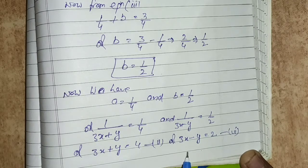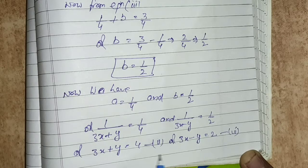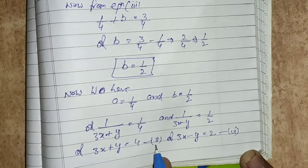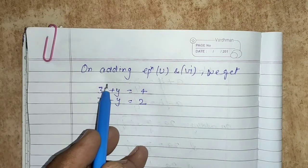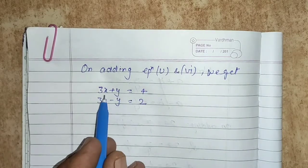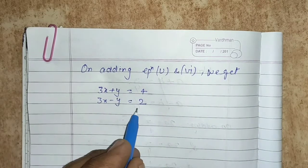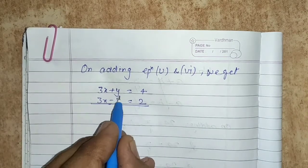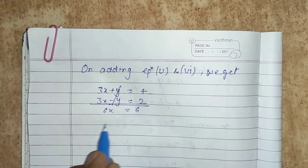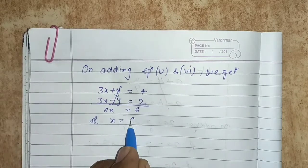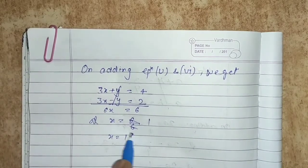We have plus y and minus y in equations 5 and 6. Adding equations 5 and 6: 3x plus y plus 3x minus y equals 4 plus 2. The y terms cancel, giving 6x equals to 6. Therefore x equals to 6 upon 6, which is 1.